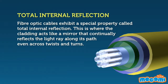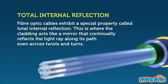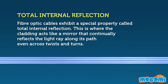Fibre optic cables exhibit a special property called total internal reflection. This is where the cladding acts like a mirror that continually reflects the light ray along its path, even across twists and turns.